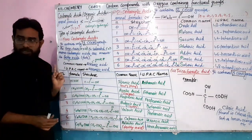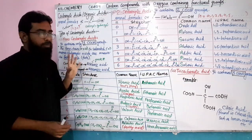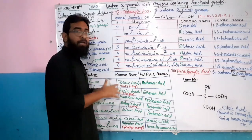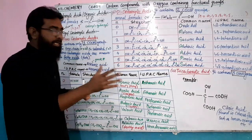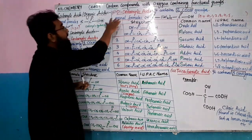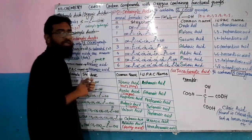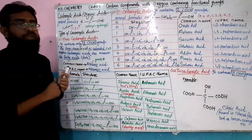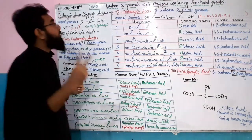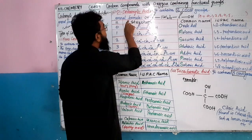This completes monocarboxylic acid with its one COOH group. Now I have to tell you about dicarboxylic acid. Dicarboxylic acid has two COOH groups attached. What is the general formula for dicarboxylic acid?